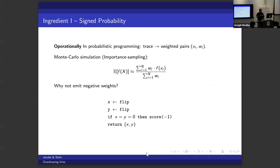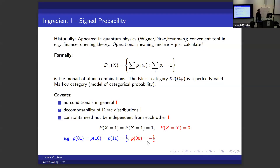Operationally, in probabilistic programming, programs run a trace outputting pairs of an output and a likelihood weight, then we do Monte Carlo sampling averaging over many traces. Nothing stops us from emitting negative weights. If we don't divide by zero, this is a valid probabilistic program. You can see it generates a score of minus one at some point, but you run it and it really produces the correct distribution.